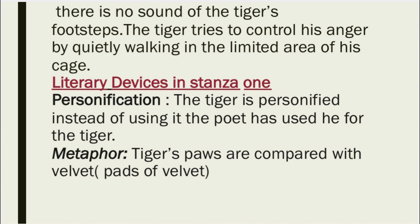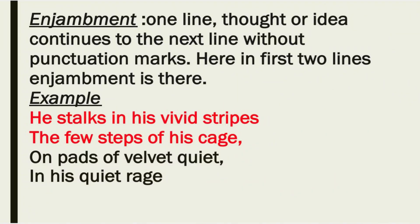Literary devices used in the first stanza: Personification — the tiger is personified; instead of using 'it,' the poet has used 'he' for the tiger. Metaphor — the tiger's paws are compared with velvet: 'pads of velvet.' Next is enjambment — a line of thought or idea continues to the next line without any punctuation mark. Here in the first two lines, enjambment is present: 'He stalks in his vivid stripes / The few steps of his cage.'